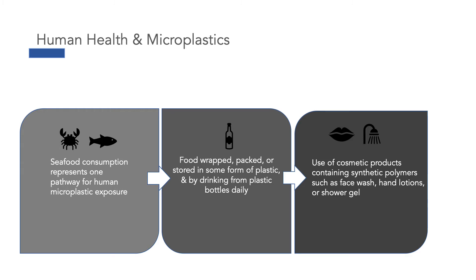Humans tend to eat the fat and muscles of fish and this is where chemicals from the toxins in plastic migrate to. There have been several reports of microplastics being found in seafood, but also in sea salt and drinking water. A study was done on eight participants who consumed seafood but also packed, wrapped, and stored their food in plastic, drank from plastic water bottles, and used cosmetic products such as face washes, hand lotions, and shower gel. The results showed that all eight participants tested positive for microplastics, found in their stool.